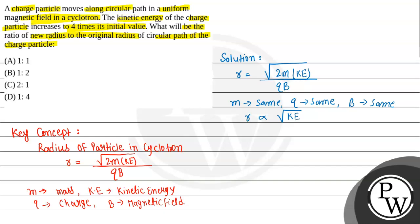Now suppose initially it was moving in first orbit when its kinetic energy was suppose KE. Now it is moving in nth orbit when the kinetic energy which is 4 times of initial kinetic energy. So in this case we need to find radius ratio.